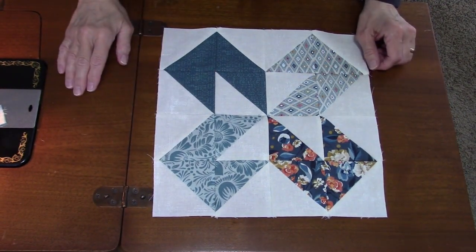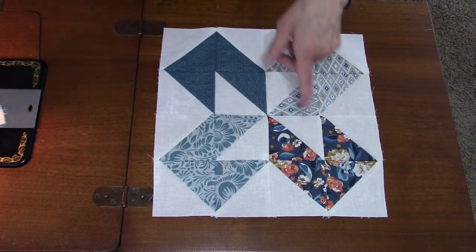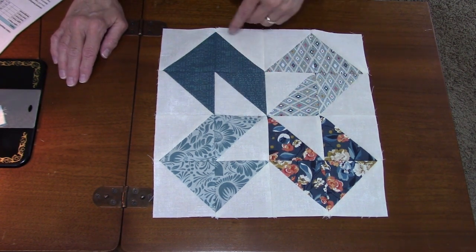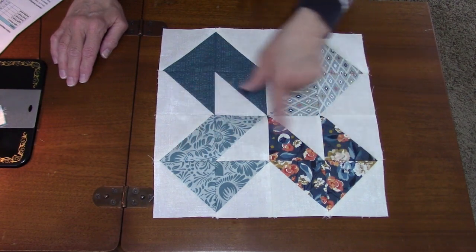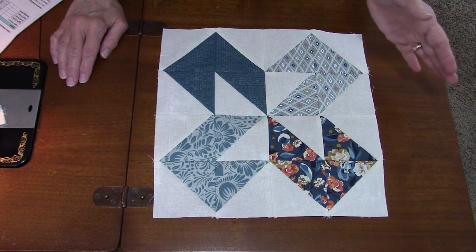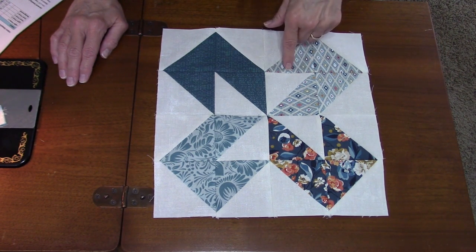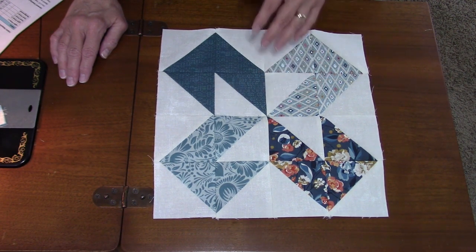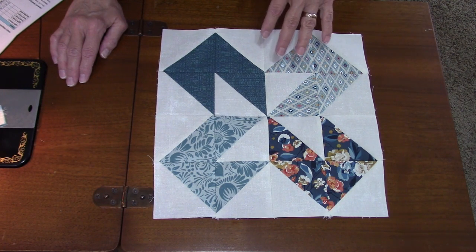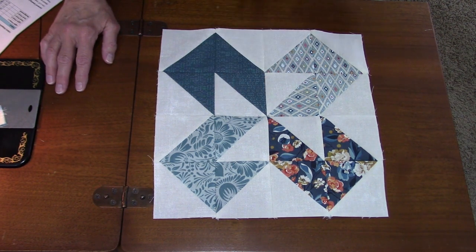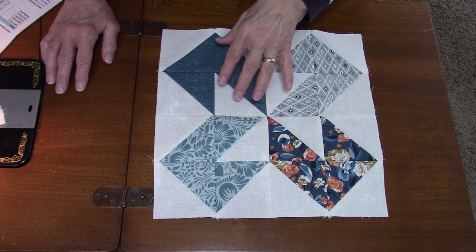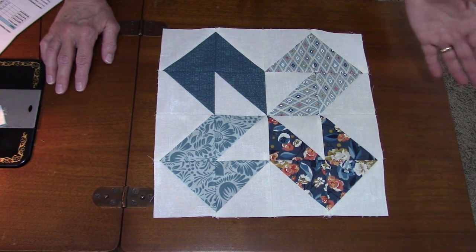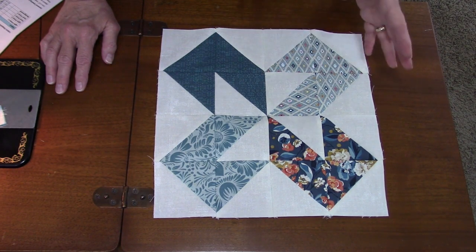Here is the completed block. So this one went together really fast and it's all half square triangles, that's all that is. It's just a matter of choosing colors you want to use and in the layout. I put it together in quadrants. You could do it and put it together in two rows, there's nothing wrong with that. I did have two fabrics that were directional, so I was able to get three pieces each to go in the same direction and then the fourth piece is turned a different way.